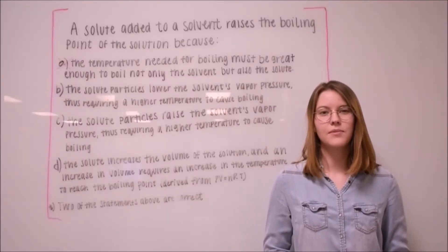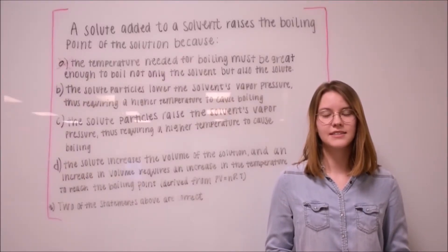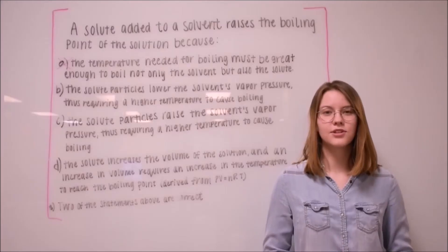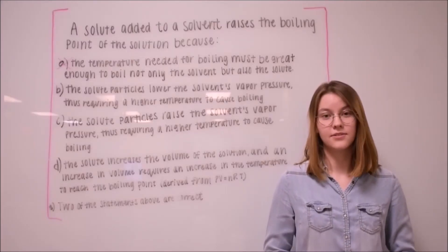But the boiling point for one molal aqueous solution of NaCl is 101 degrees Celsius. This example shows that option A would be incorrect.